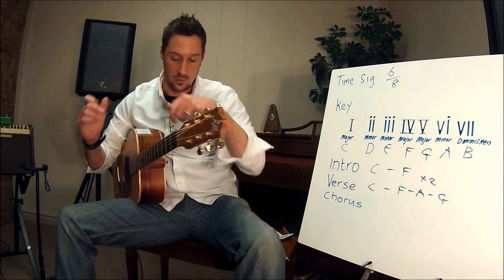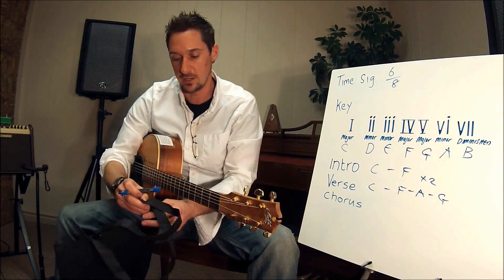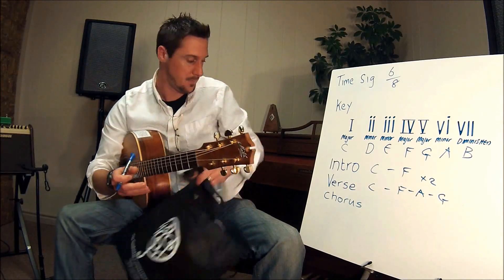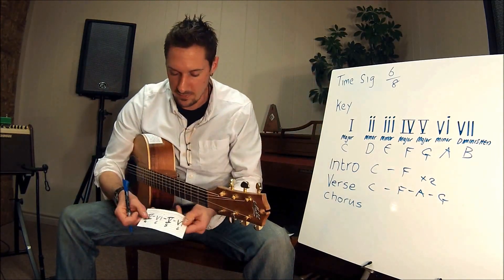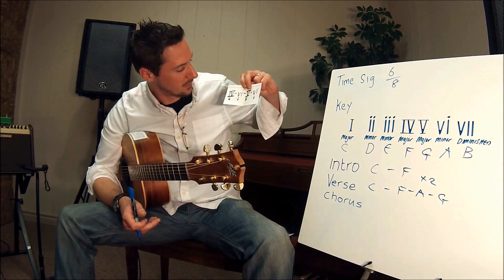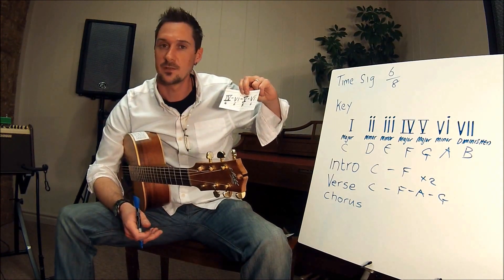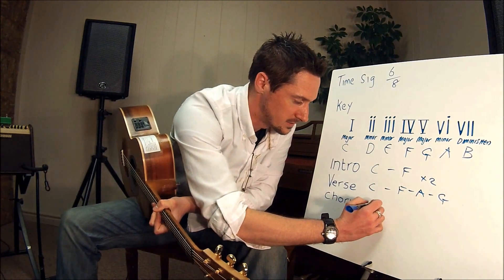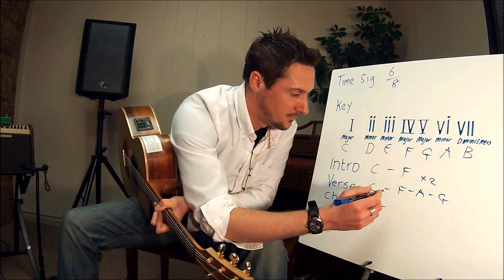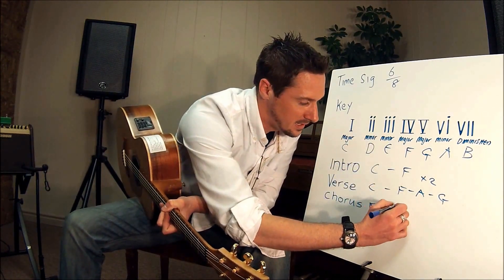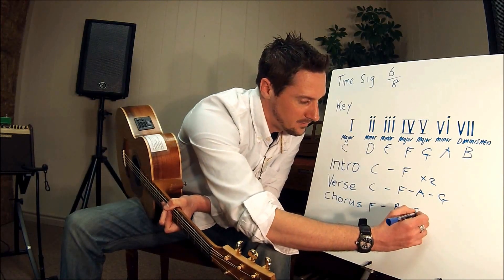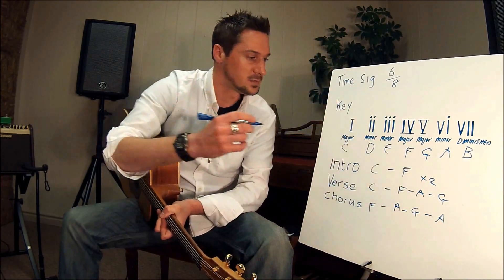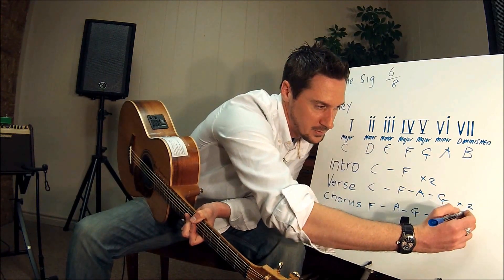And finally we need a chorus — that's the last thing we're going to write here. This song's coming together now. I'm going to take this card here, and this progression is a four, six, five, six. So in the key of C, my chorus is going to start with an F, then A minor, then a five which is G, and then a six again which is A minor. I'm going to do everything two times.